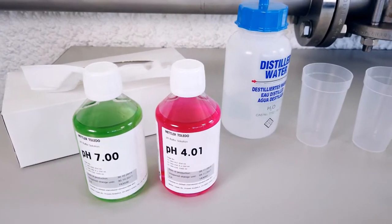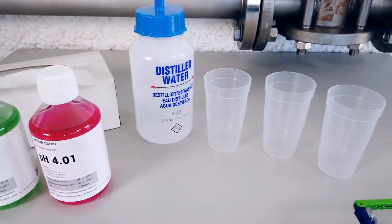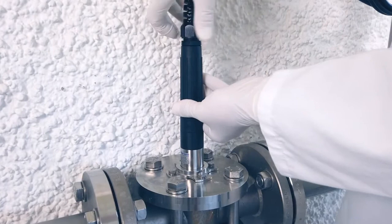For a two-point calibration, use pH 4 and pH 7 buffers. The first thing you have to do is extract the sensor from the process.